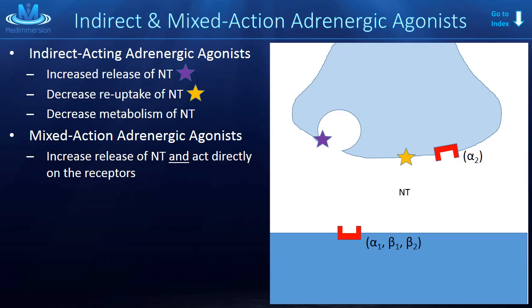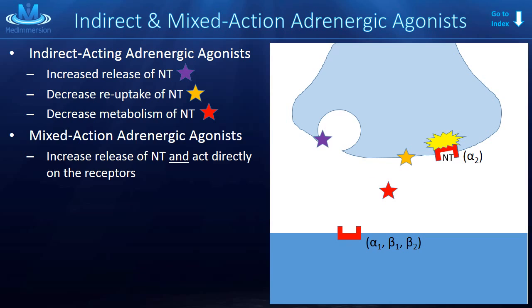There is still neurotransmitter hanging out in the synaptic gap. Some of that neurotransmitter is metabolized — I'll use the example of it being metabolized right here in the gap. Various enzymes degrade and remove the neurotransmitter from that gap. Take this red star, for example: it's a drug that blocks the action of those degrading enzymes. The receptors are stimulated, but not directly by the drug. The mixed action adrenergic agonists do pretty much what they sound like — they increase the release of neurotransmitter, similar to the purple star drug, and they also directly act on the receptors.